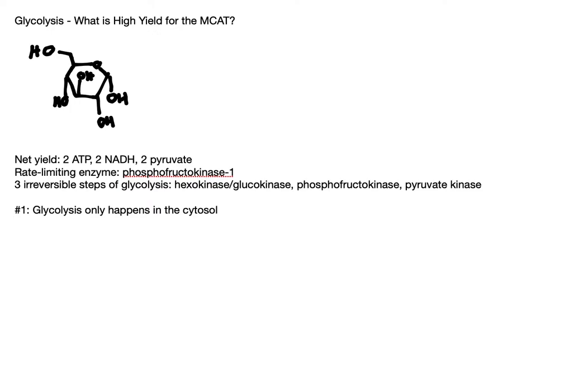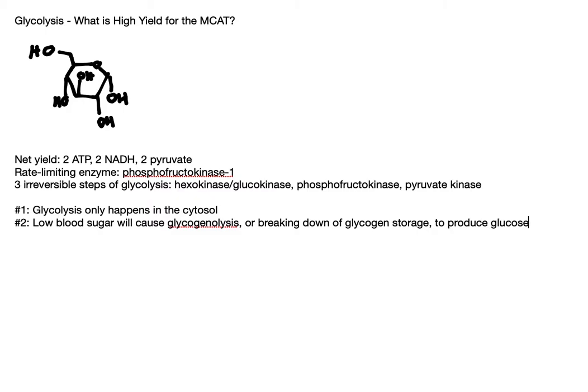Another useful big-picture fact is that low blood sugar will trigger glycogenolysis — the breaking down of glycogen storage — to produce glucose for glycolysis. It's useful to remember that all of this is happening to create energy, and with low blood sugar we need to break down glycogen. So glycogenolysis is breaking down glycogen to supply glucose for glycolysis, and that will be a good first step to keep in mind as we go through later metabolic pathways.